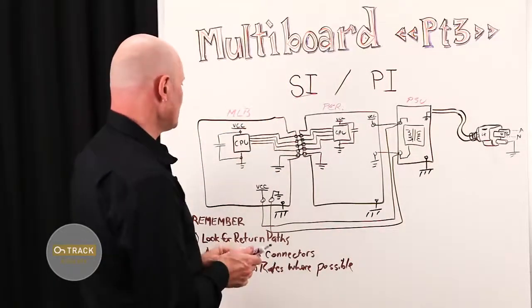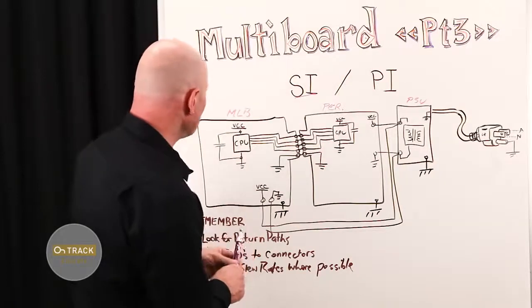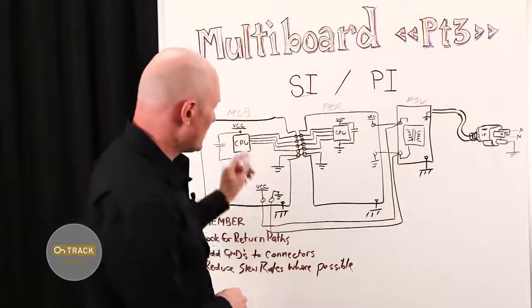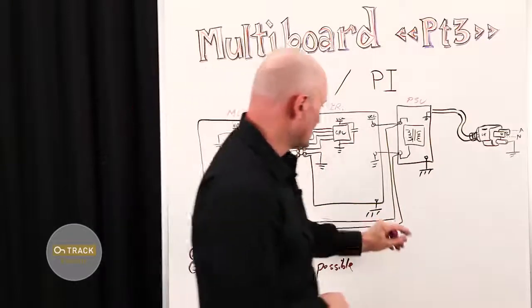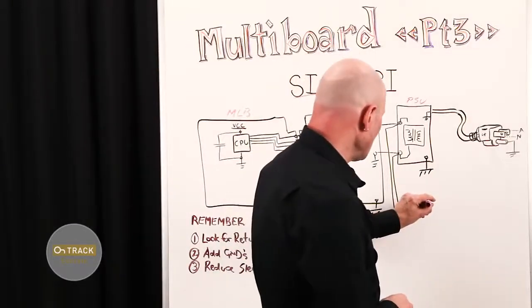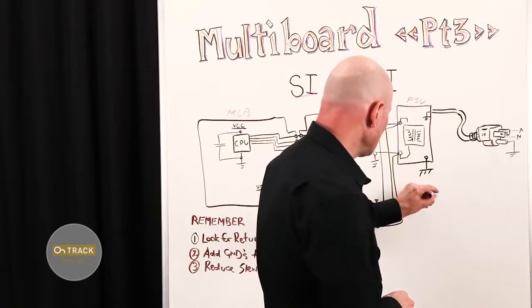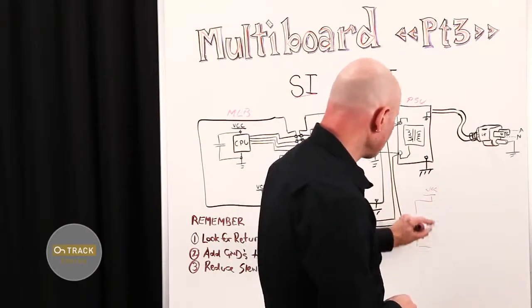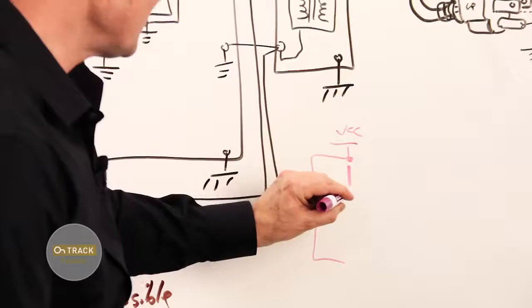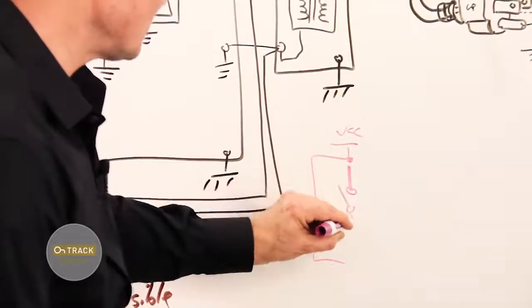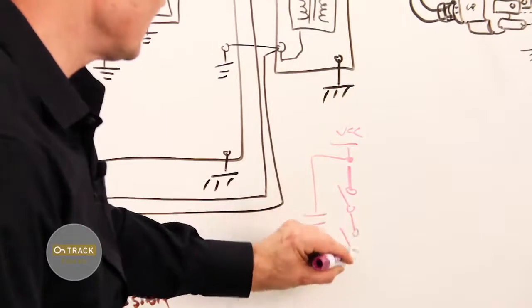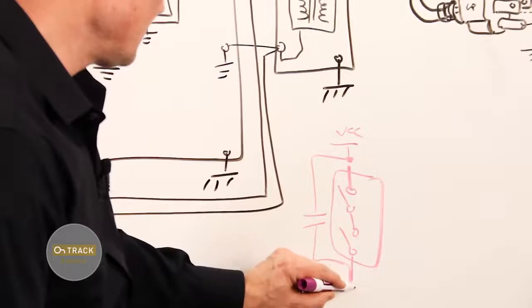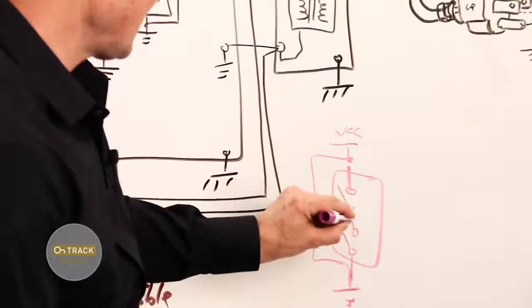And what happens is when you actually send a signal from one logic device to another, just by way of illustration over here, you have VCC, you have some bypass or decoupling, some people call it, capacitance, and you have MOSFET switches inside the device. Let's say this is inside the chip, and that's ground.